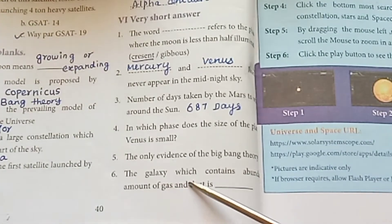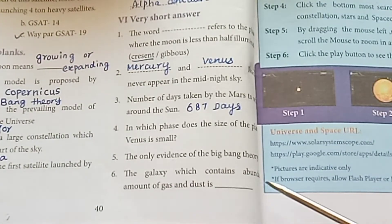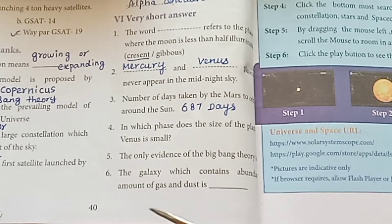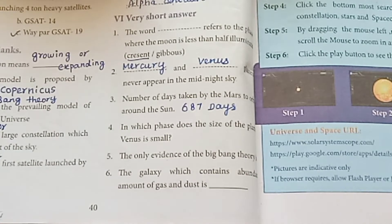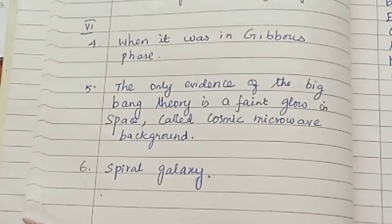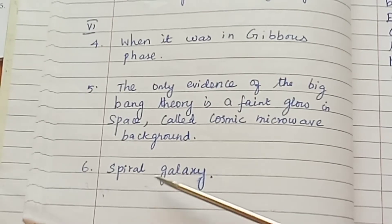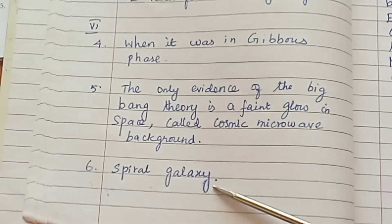Question 6: The galaxy which contains an abundance of gas and dust is the spiral galaxy.